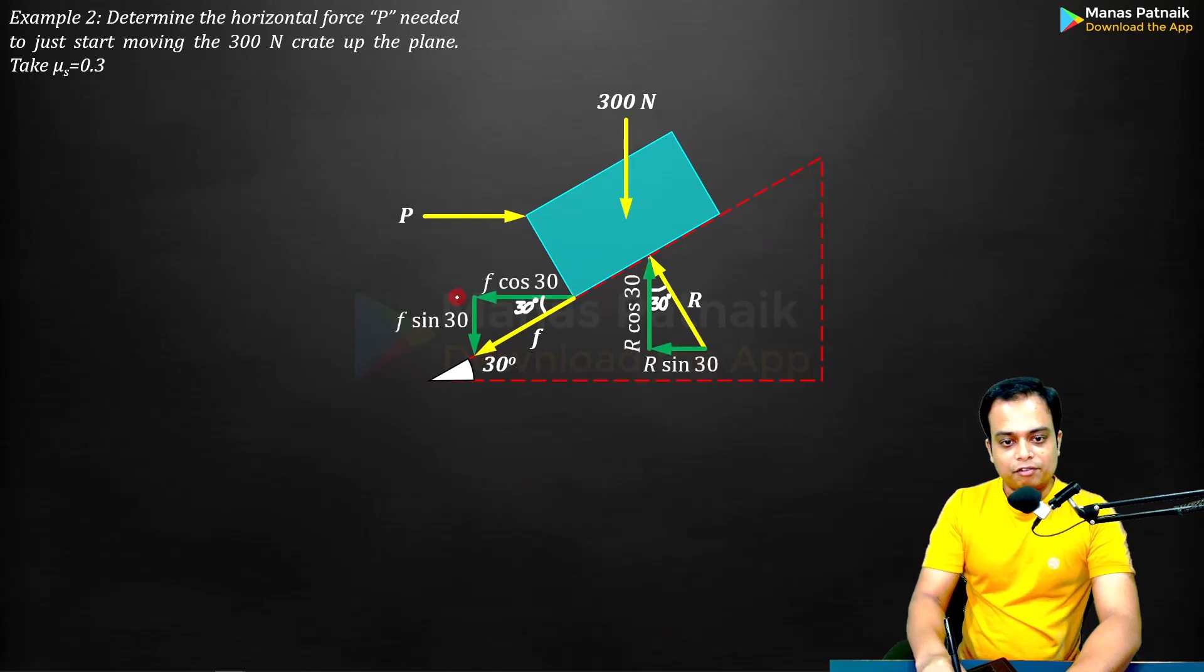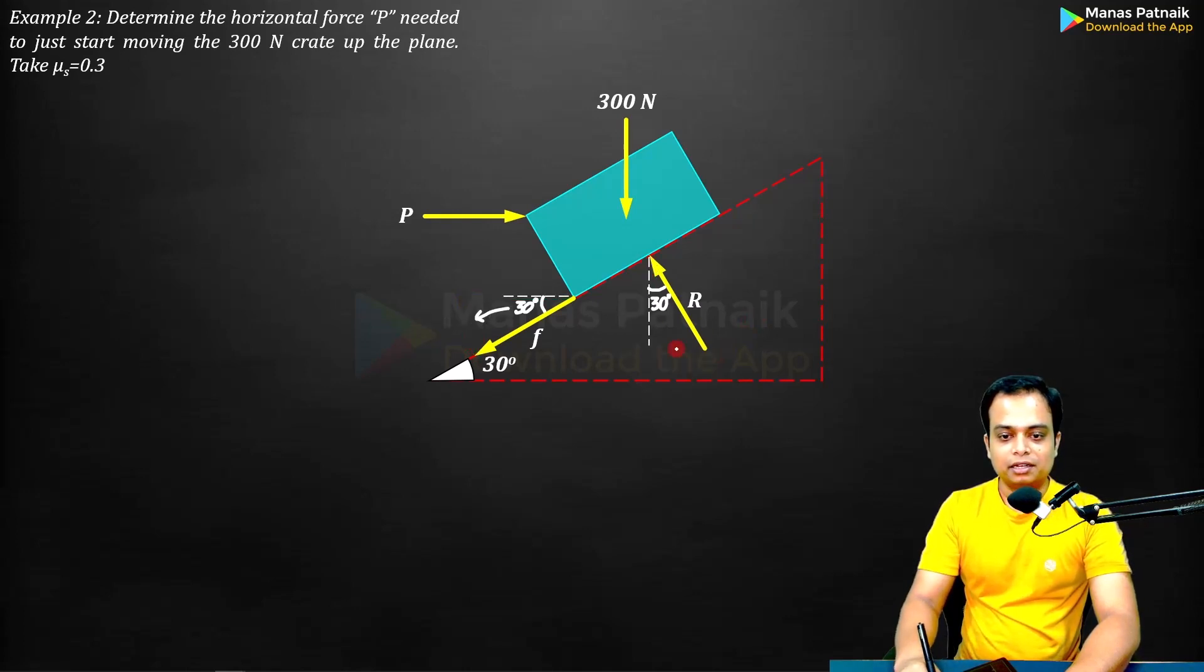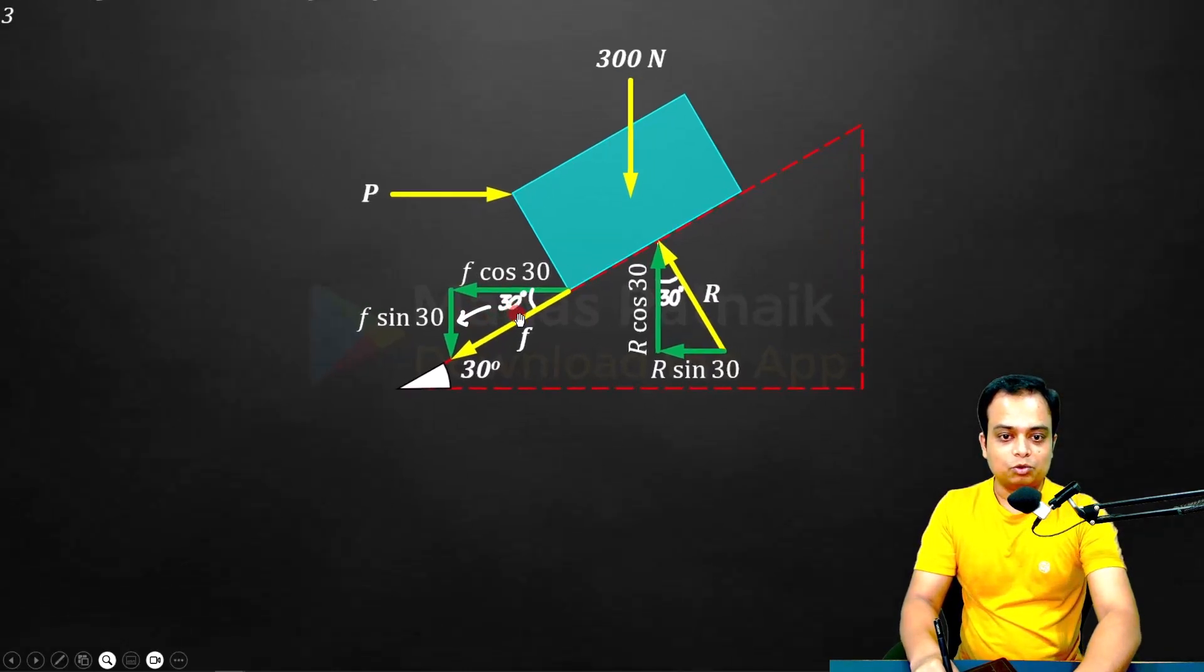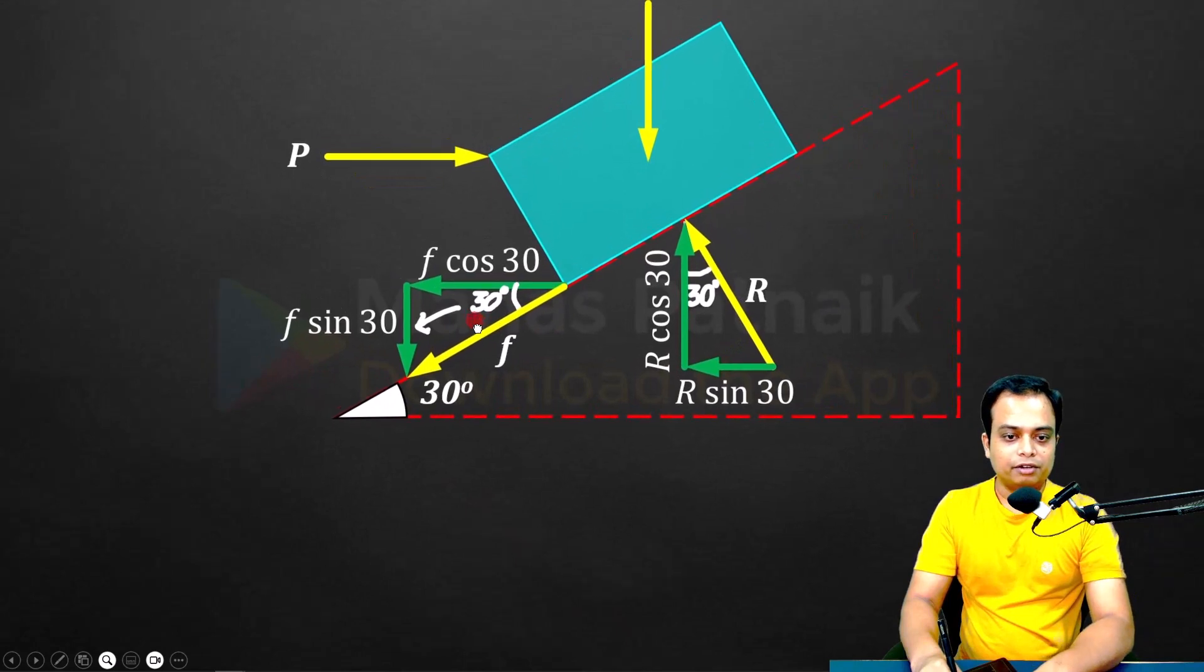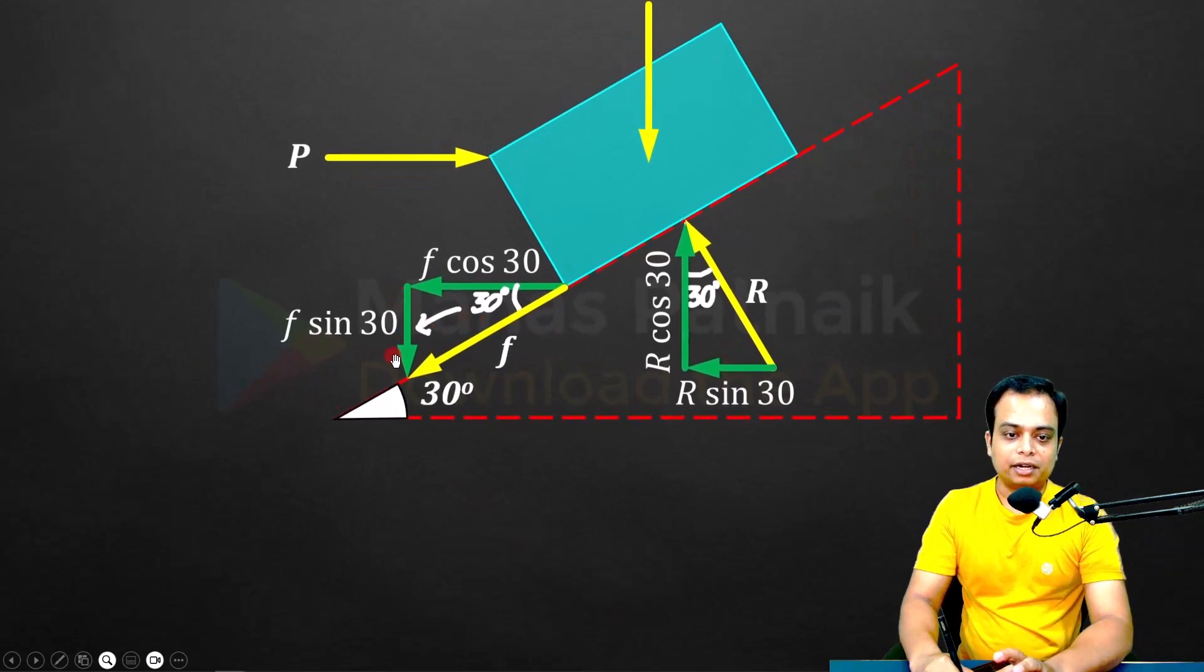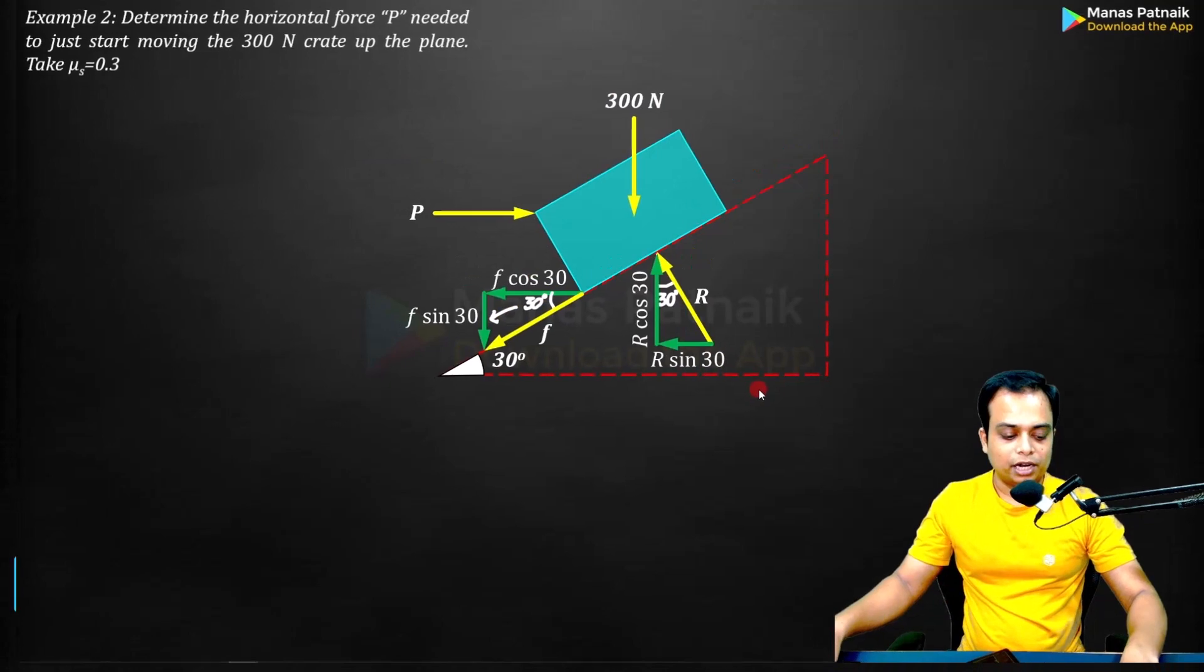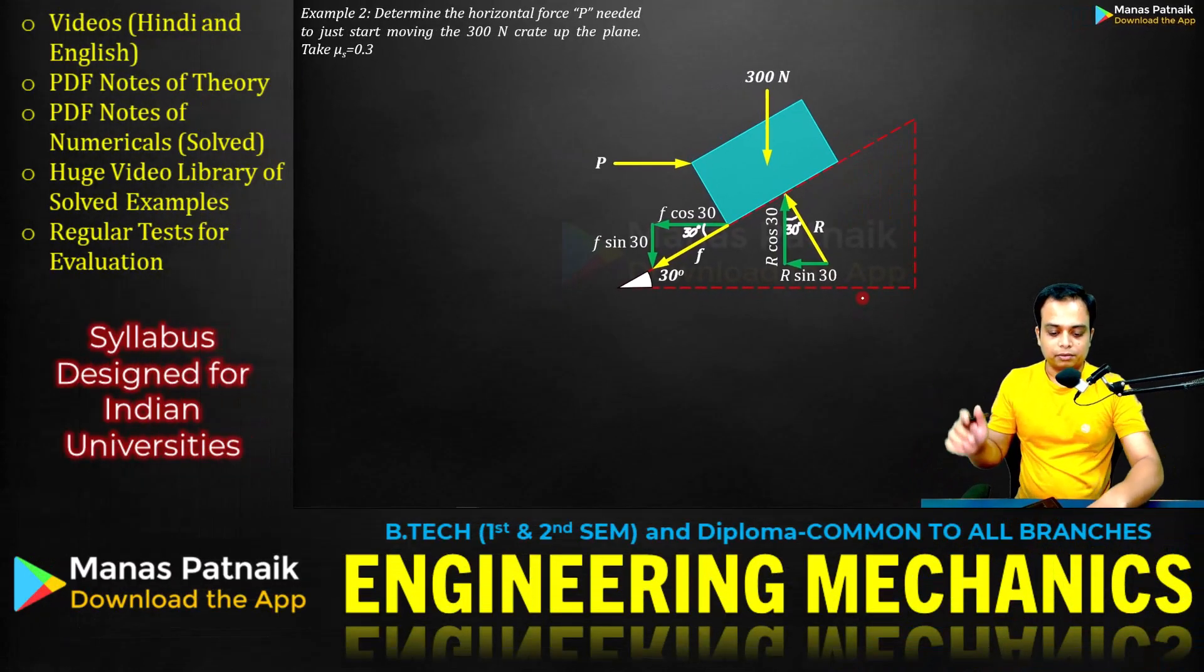F, f cos 30 and this component is in front so that's sine component, f sin 30. In the same fashion, if this is R, this over here is going to be R sin 30 and this is R cos 30. Always remember the component in front of this angle is the sine component, and the one remaining is the cos. Here also this is 30 degrees, in front of it we have this component, it is the sine component.